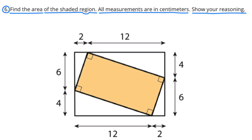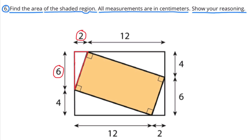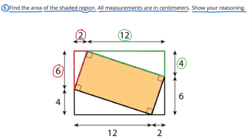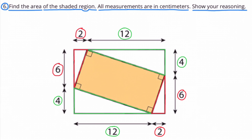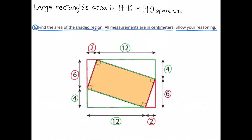Number 6. Find the area of the shaded region. All measurements are in centimeters. Show your reasoning. The shaded region is on the inside of a larger rectangle. The shape of the shaded region is also a rectangle sitting at an angle, which forms four small triangles that are not shaded. The small triangles have dimensions 2 by 6, and the larger triangles have dimensions 4 by 12. We use these to find the height and base of the larger rectangle: 12 plus 2, or 14 for the base, and 6 plus 4, or 10 for the height. The large rectangle's area is 14 times 10, or 140 square centimeters.